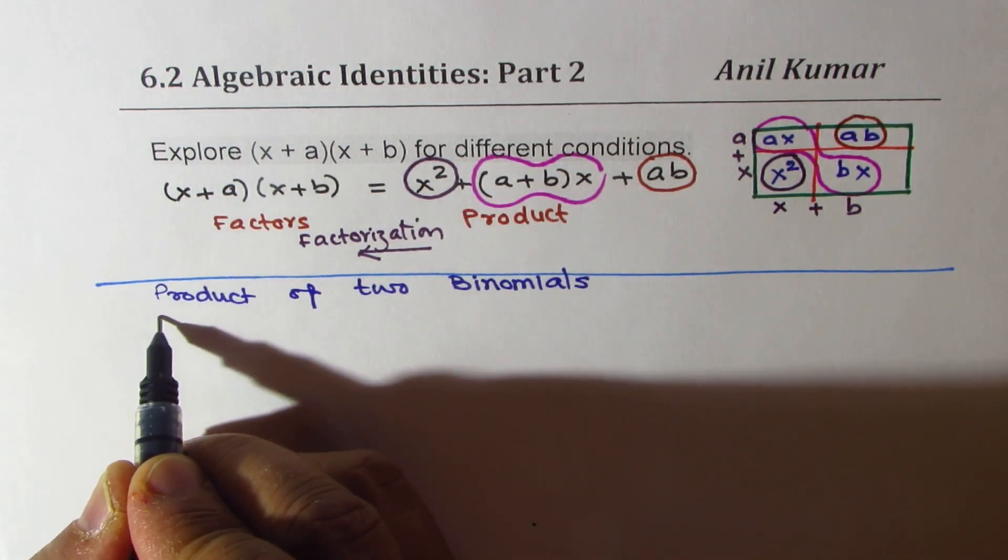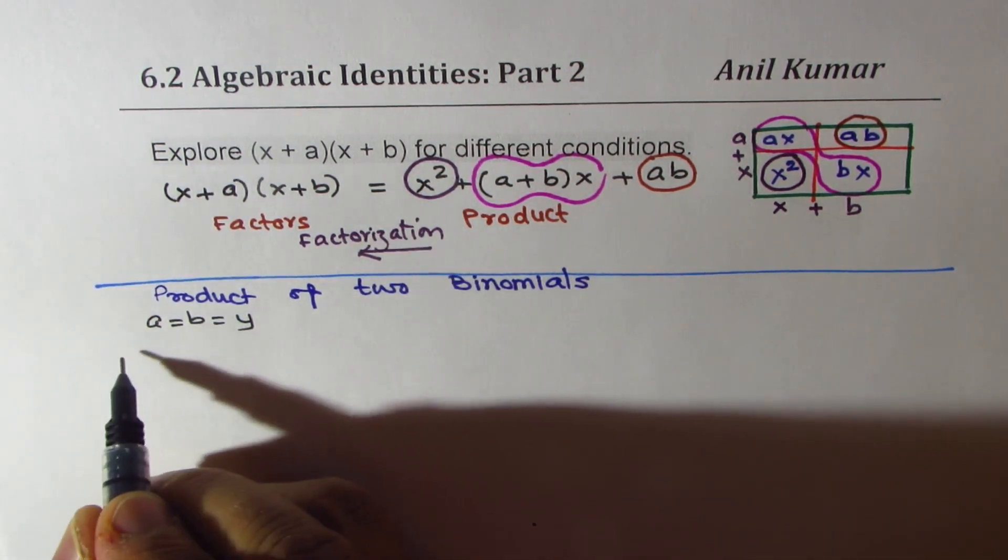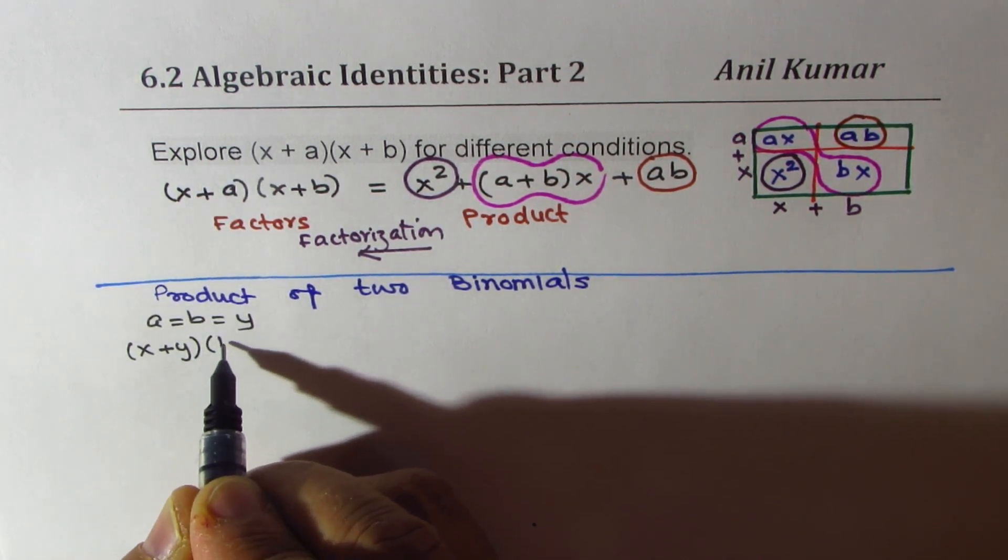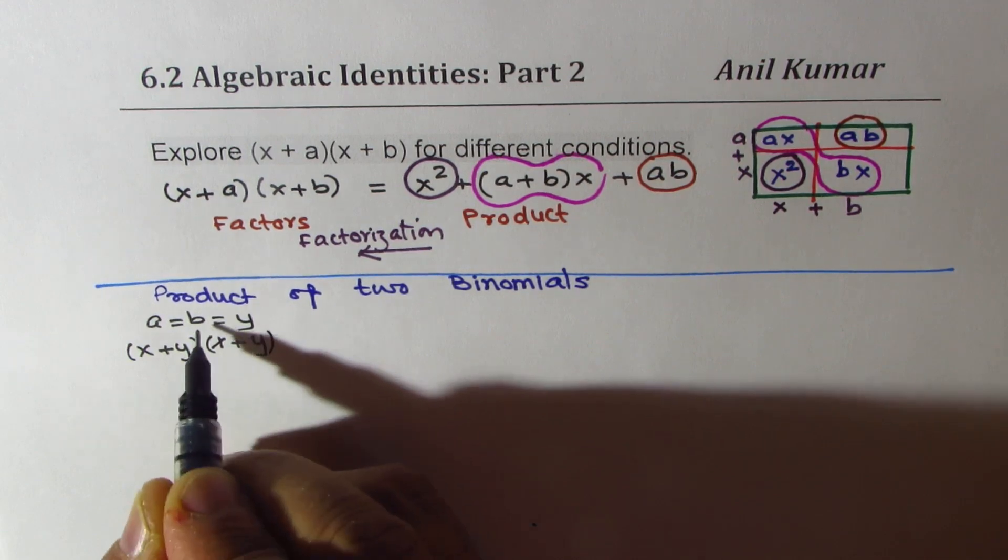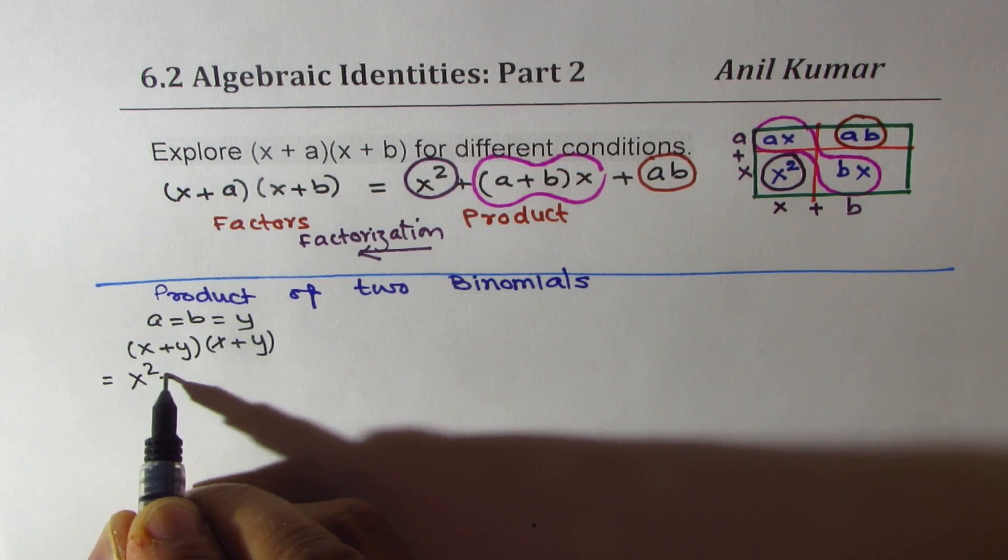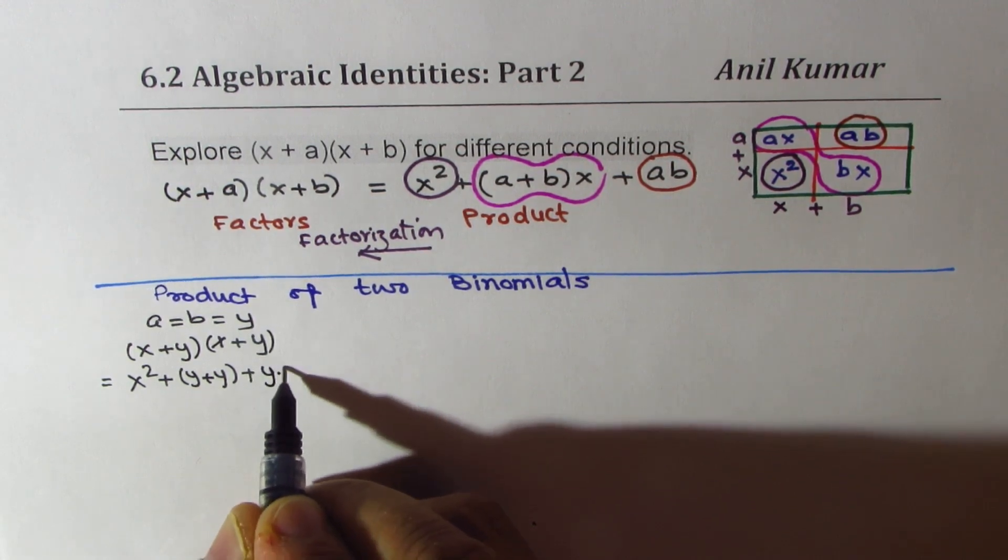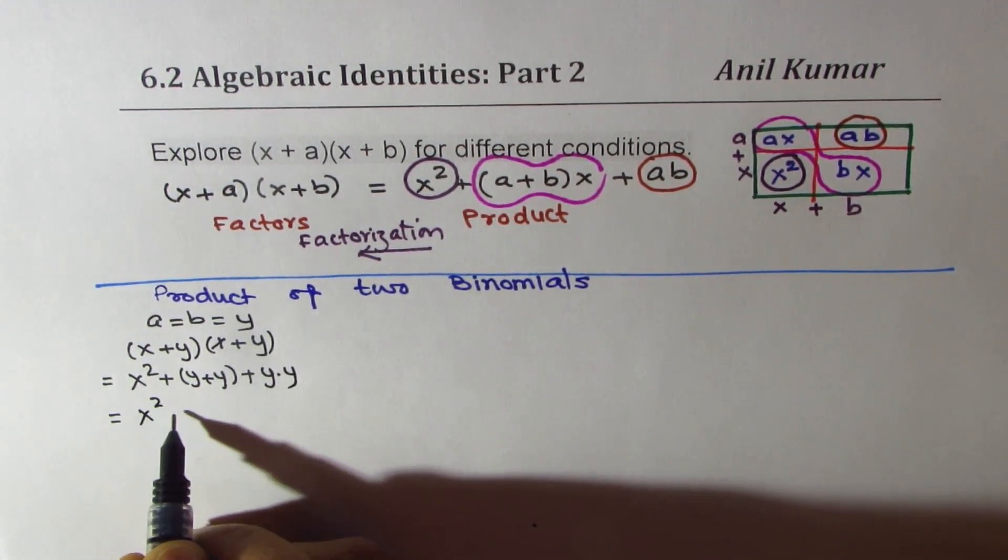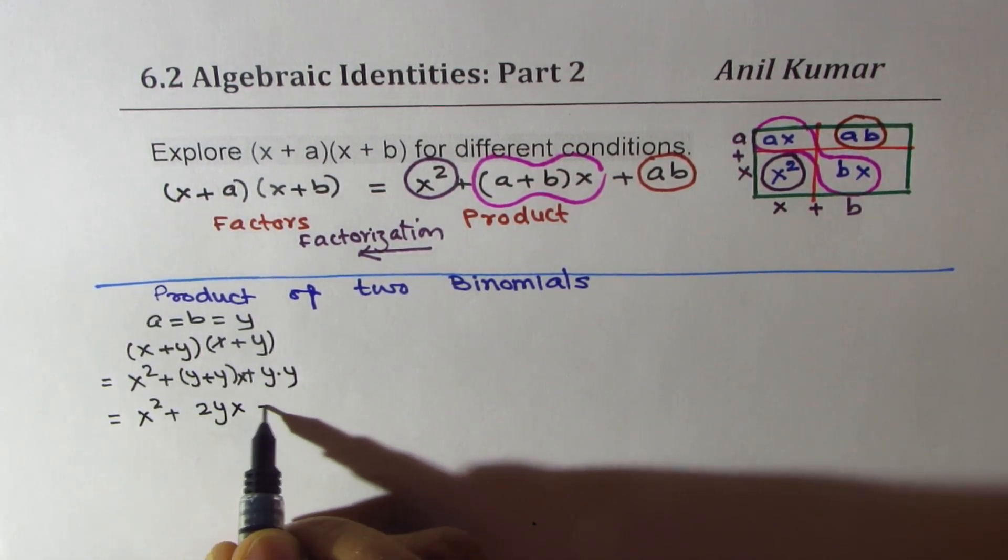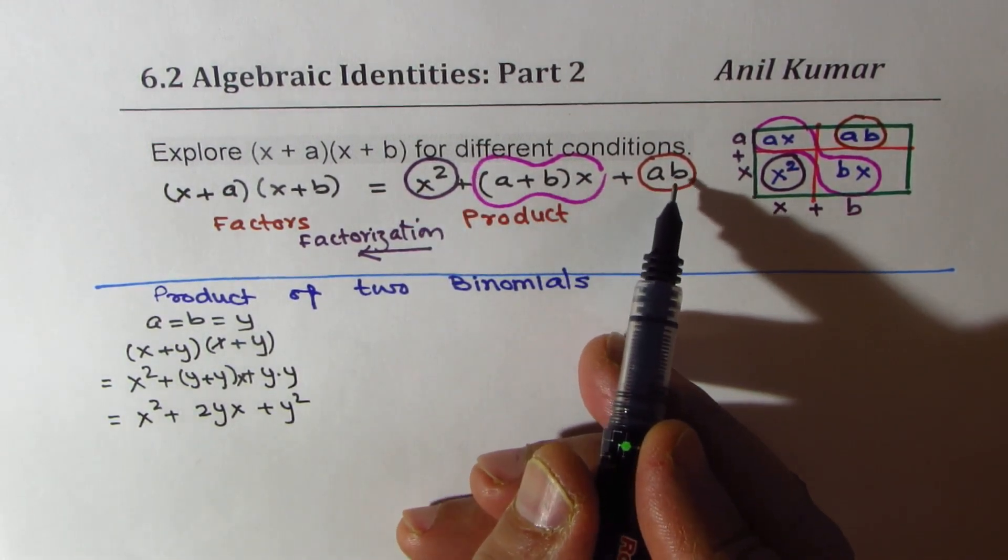So I will take up different conditions now and then explore x plus a times x plus b. So first condition, let us say that both a and b are equal to y. In that case, I could write x plus a as x plus y times x plus y. Now, this expands to x squared plus sum of these two, that means y plus y, plus product of these two, that means y times y. So clearly, that gives you x squared plus 2yx plus y square. Sum times x plus their product.